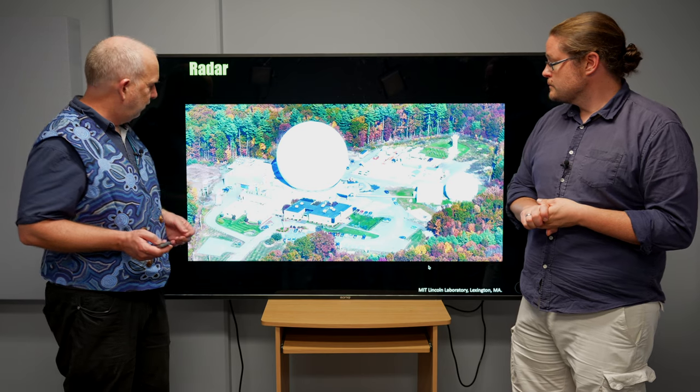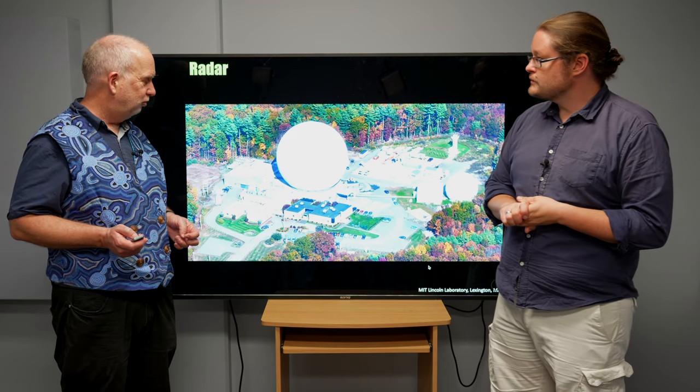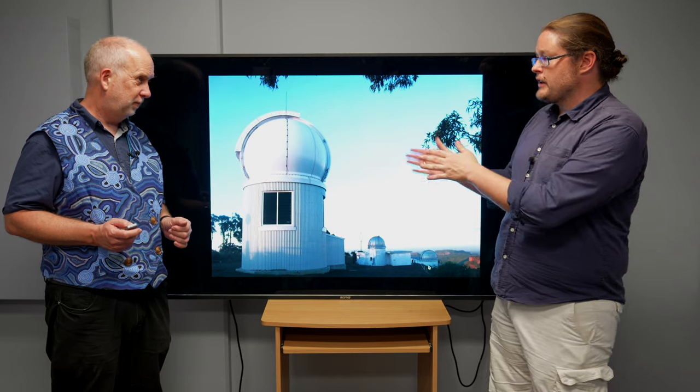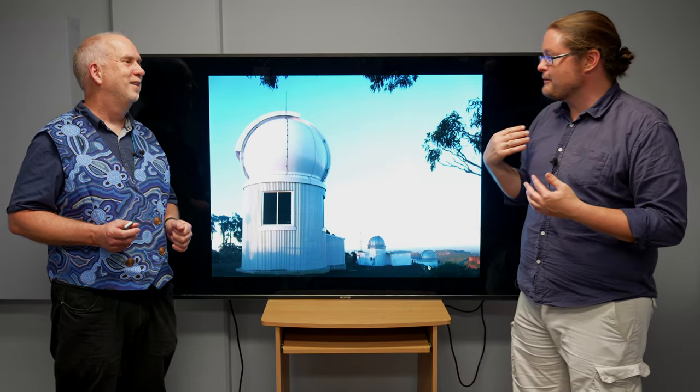So here's an example of that. This is the Haystack radar, which is finding these things. And here's a SkyMapper telescope at our own Siding Spring Observatory, which has been used a lot for this space situational awareness. And again, it was originally designed for wide field of view to find things like comets and supernovae, but now retrofitted essentially just through software to find these satellites.